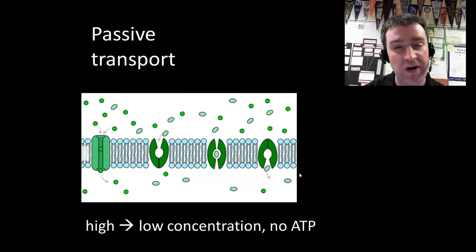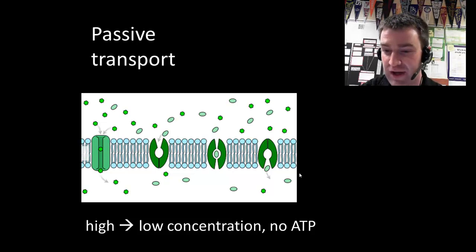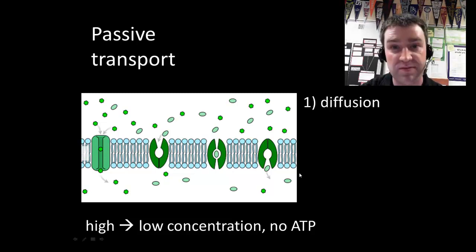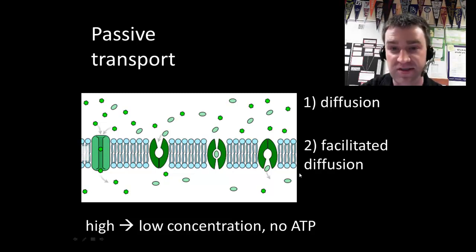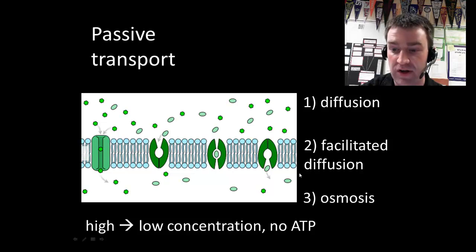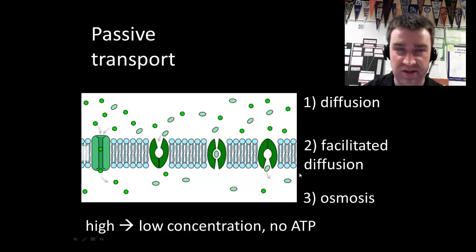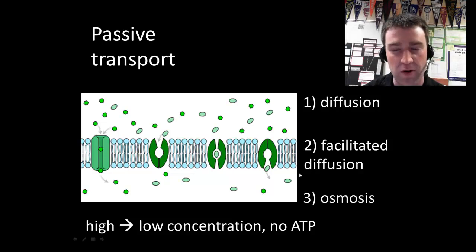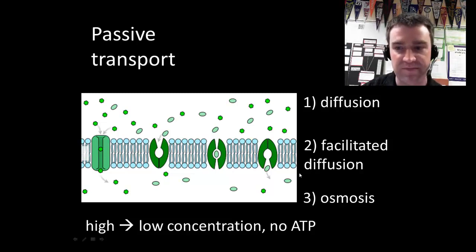There are some different types of passive transport worth briefly covering: diffusion, facilitated diffusion, and osmosis. There are just slight differences between the three, but all of them involve moving from high to low concentration.